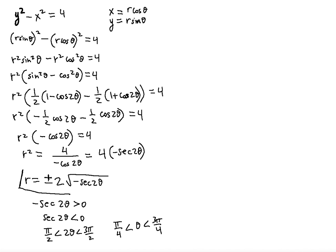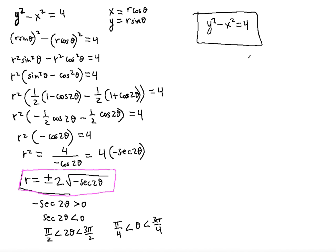Now let's understand the original equation y squared minus x squared equals 4. This is the equation of a hyperbola. If we let x equal 0, then y squared equals 4, so y equals plus or minus 2. So when x equals 0, y is plus or minus 2 — those are points we can plot immediately.